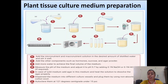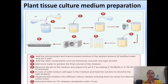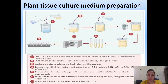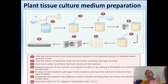Then the pH is adjusted. According to the explant or the plant, the pH requirement of each plant is different — this is a crucial step. We adjust it using 0.1 normal NaOH or 0.1 normal HCl. If we need to basify the medium we use 0.1 normal NaOH; if we want to acidify, we use 0.1 normal HCl.